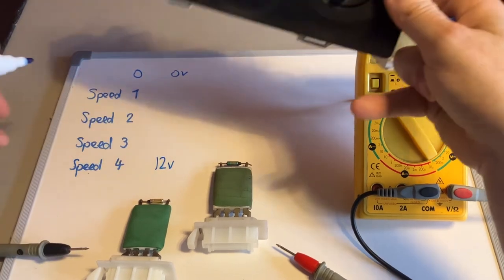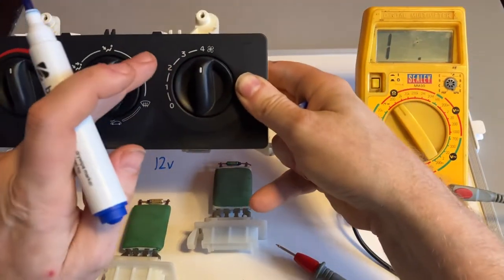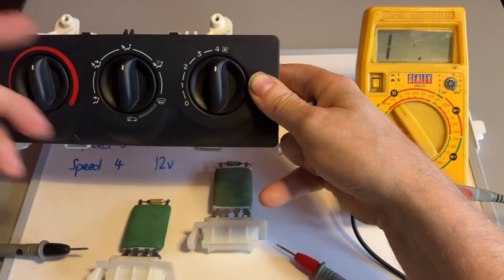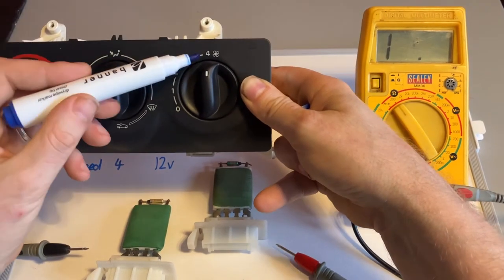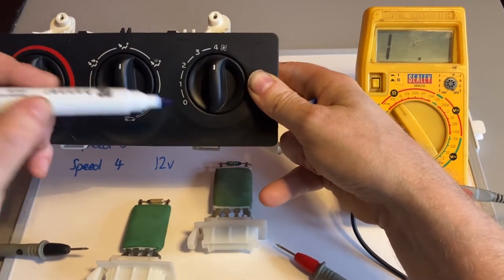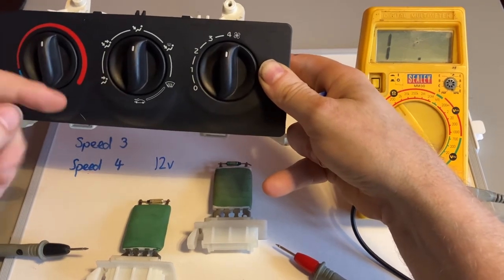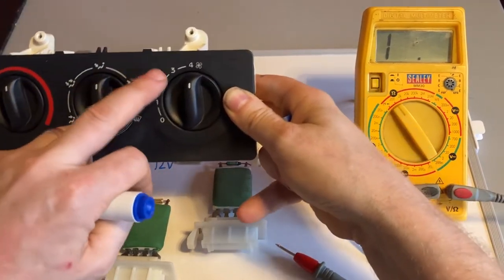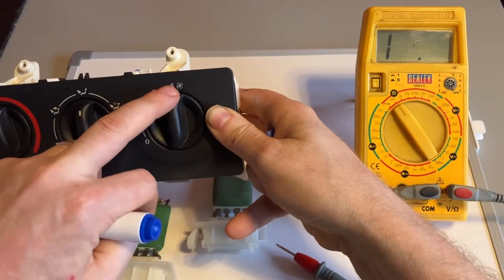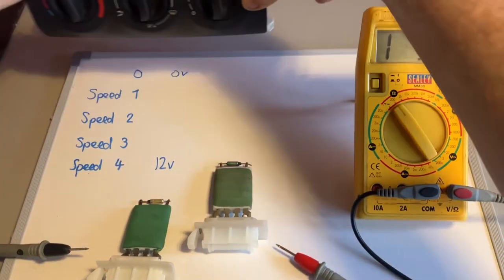So the resistor pack is for the settings in between. So that's your answer to what the symptom would be. If your blower motor only works on full speed or not at all on zero, then it'll be the resistor pack that's failed. If the resistor pack goes down, all the speeds in between full speed and zero will go down.